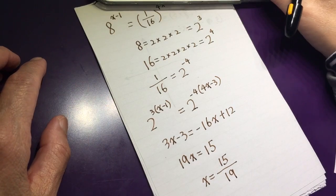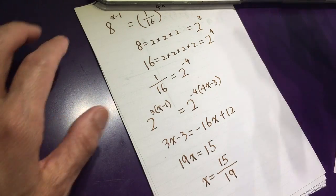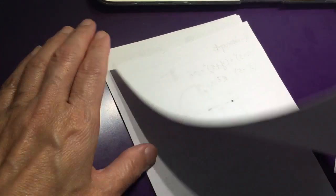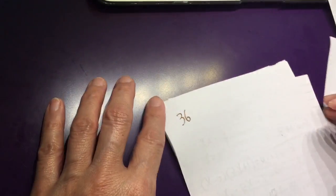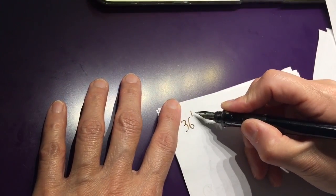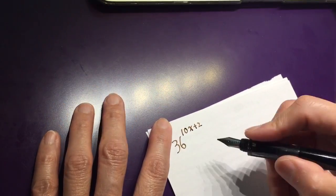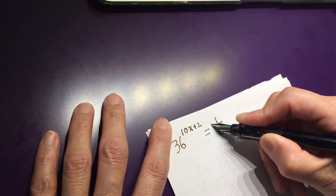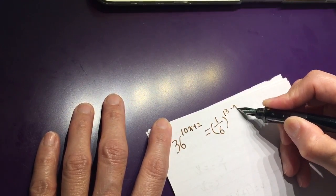I think 2 is enough, right? Let's see if we have the third one. Okay, 3 is always better. So, 36 to the power of 10x plus 2 equals 1 over 6 to the power of 13 minus x.